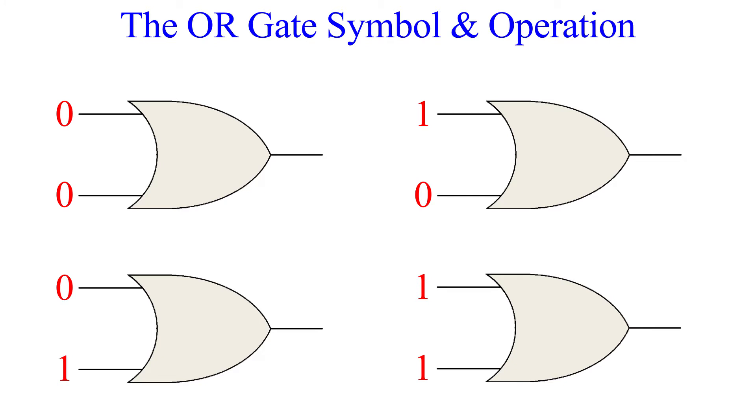The OR gate functions by producing an output if any of the inputs are high. If all of the inputs are low, there will be no output. That is, the output will be low. So our first gate has inputs of 0 and 0, so the output is 0.